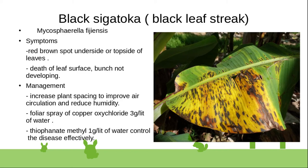The red-brown spots on leaves lead to death of leaf surface tissue. Developing bunches on such plants may be affected. Management includes increasing plant spacing to improve air circulation and reduce relative humidity. Foliar spray of copper oxychloride at 3 grams per liter of water and thiophanate-methyl at 1 gram per liter of water controls this disease effectively.